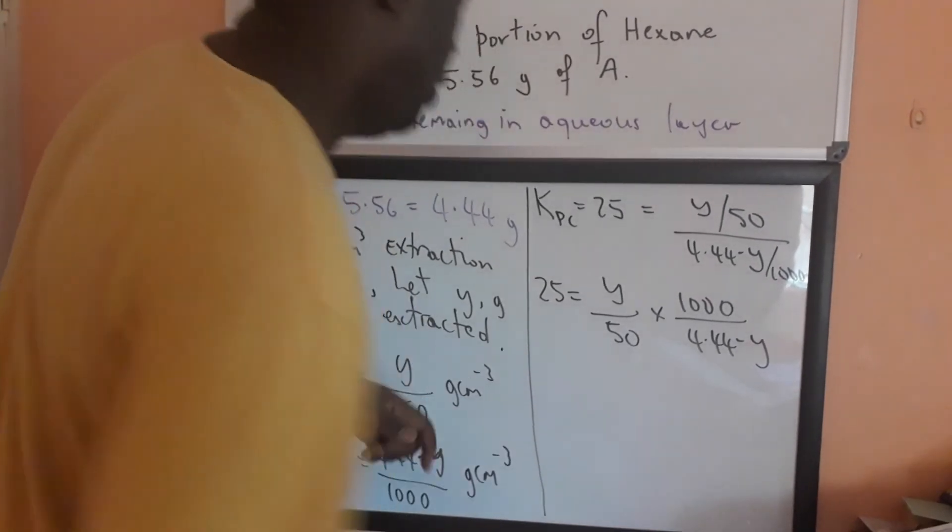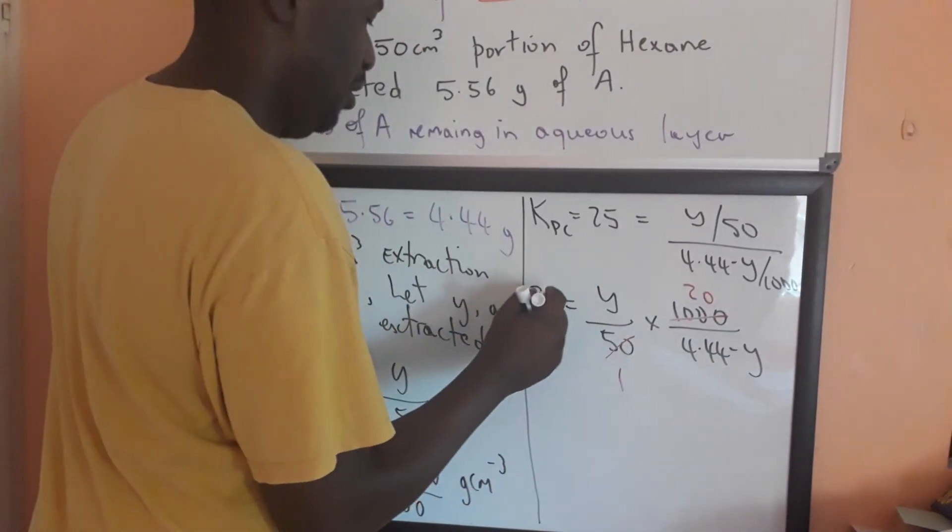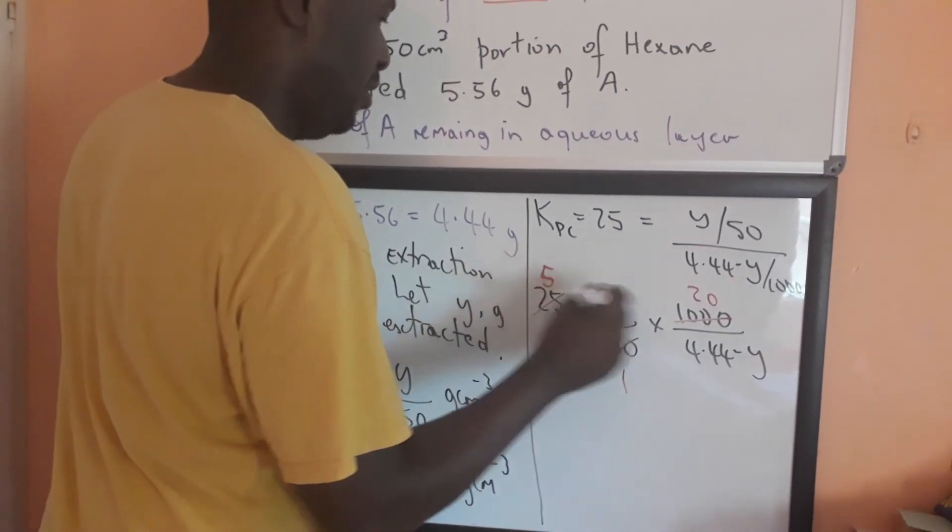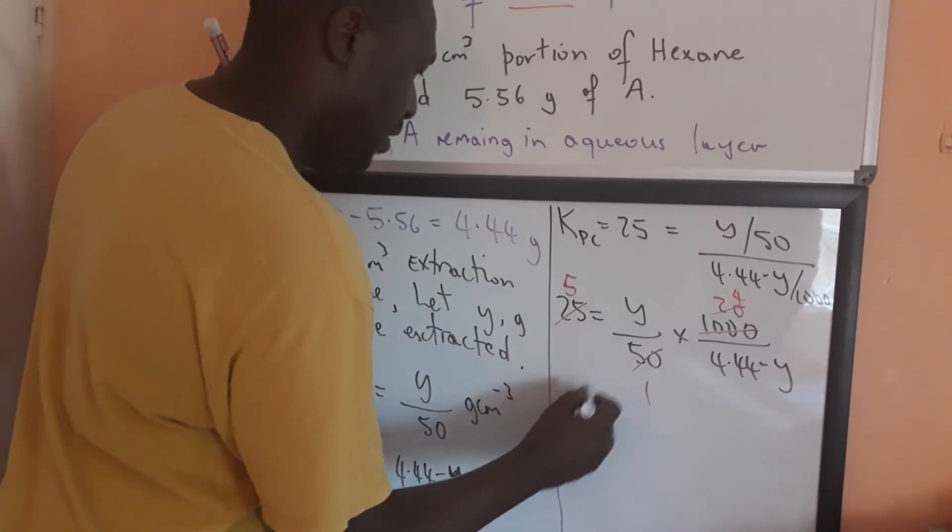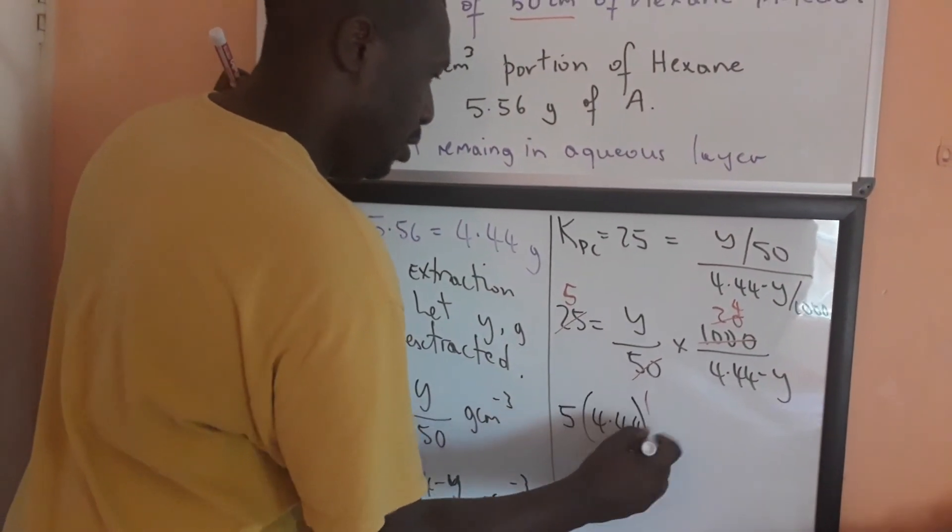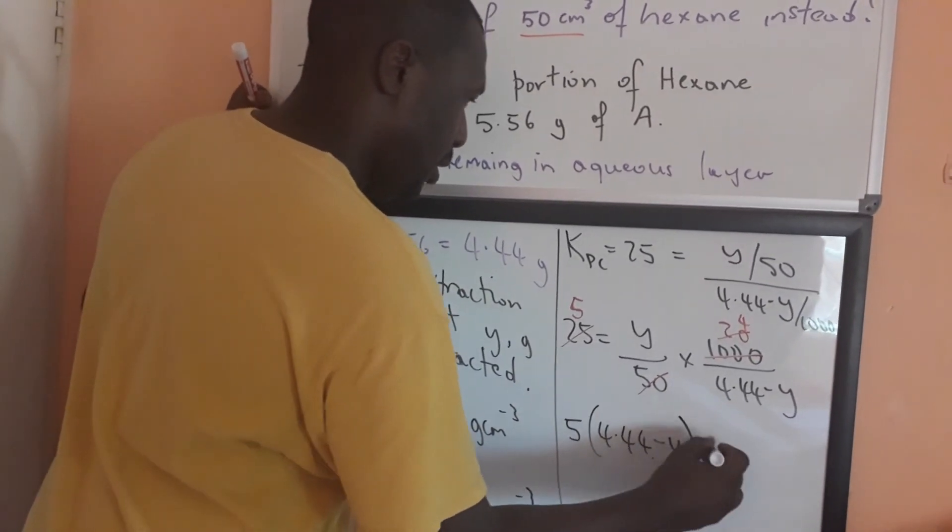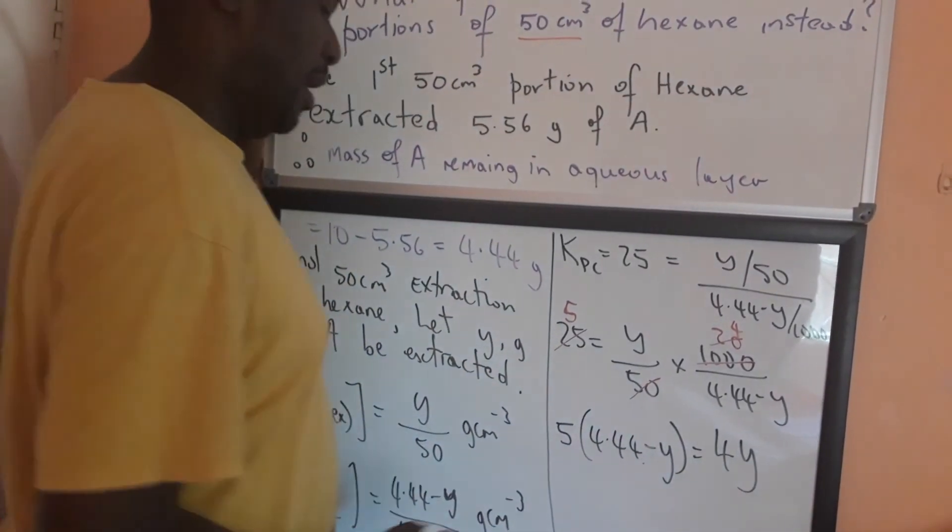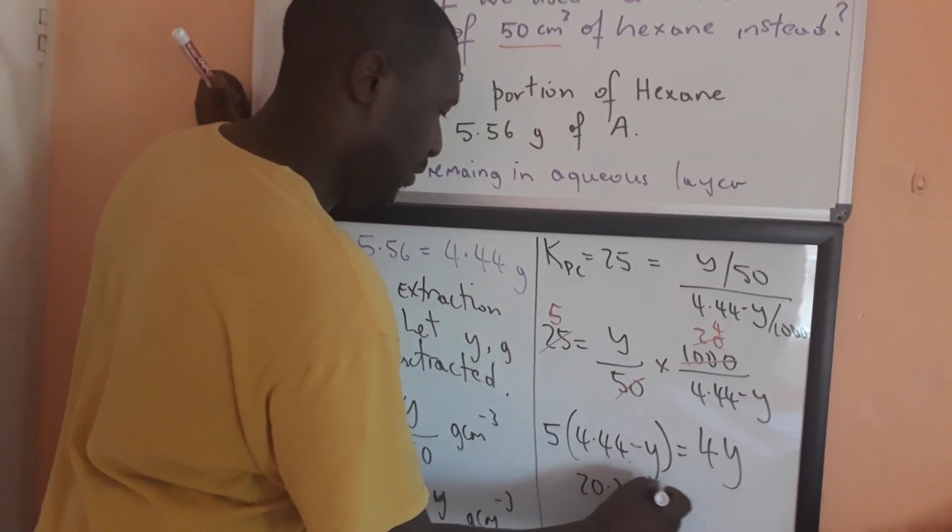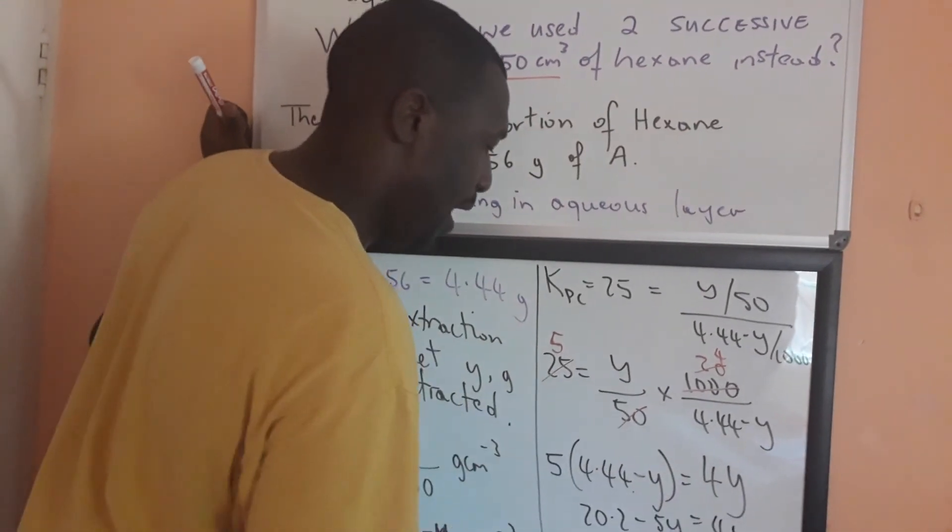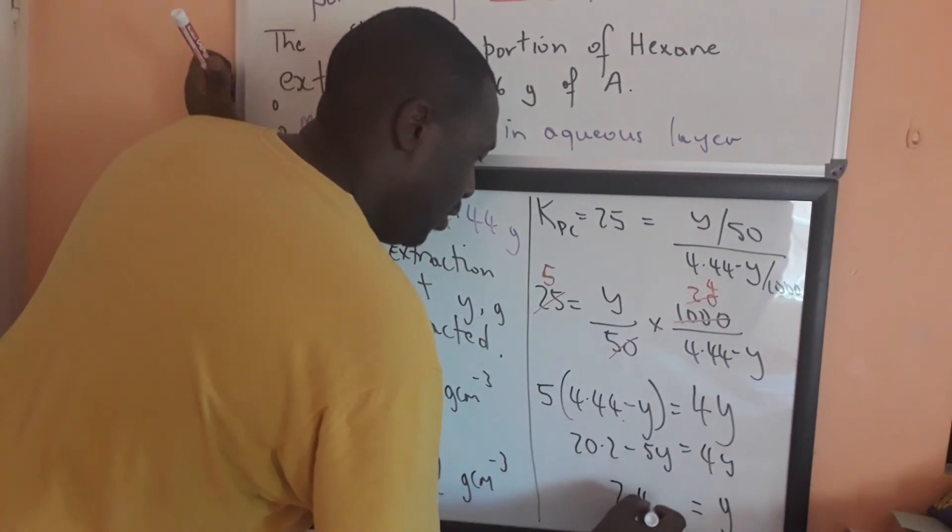Now, if we cancel that down, to make it simpler, that into that goes 1, that into that goes 20, 5 into this goes 5, and 5 into that goes 4. And so, we come down to 5 times 4.44 minus Y is equal to 4 times Y. And that is going to work out to 22.2 minus 5Y equal 4Y. And then Y, if you work that out, is going to come to 2.47 grams.